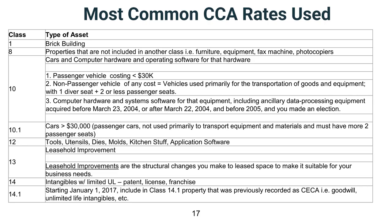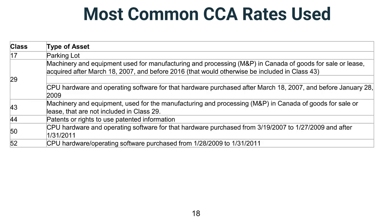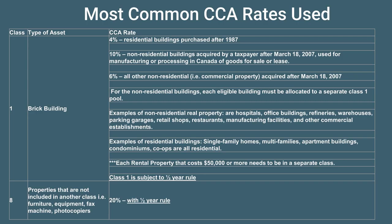Here are the most commonly used CCA rates, the types of assets they apply to, and some rules that apply. Class 8 is essentially the catch-all — if an asset doesn't fit in any other class, it fits in class 8. There are additional commonly used CCA rates on the next slide. I've created a more detailed document highlighting all the different types of assets, their CCA rates, and descriptions — link is in the description below.